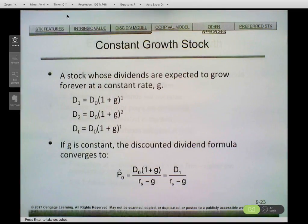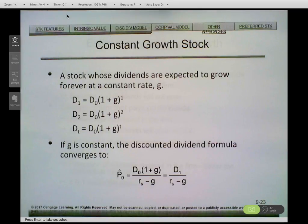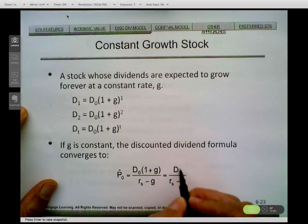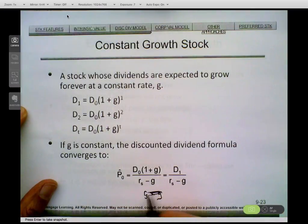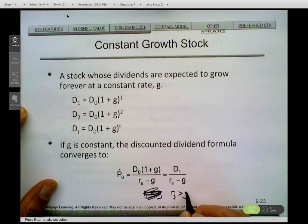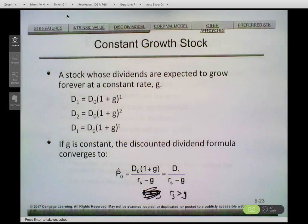We covered the constant growth dividend discount model, also called the Gordon Growth Model. In this model, we assume dividends grow at a constant rate G. As long as G is less than the required rate of return, we can estimate the value of the stock as the most recent dividend times (1 + G), divided by R_s minus G. R_s must be greater than G — that's a critical point.